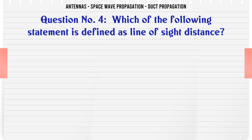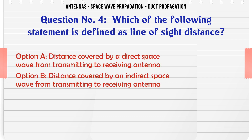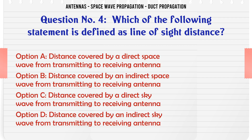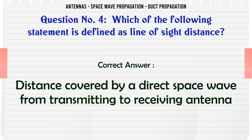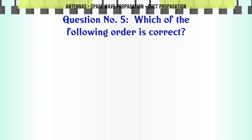Which of the following statements is defined as line-of-sight distance? A) Distance covered by a direct space wave from transmitting to receiving antenna. B) Distance covered by an indirect space wave from transmitting to receiving antenna. C) Distance covered by a direct sky wave from transmitting to receiving antenna. D) Distance covered by an indirect sky wave from transmitting to receiving antenna. The correct answer is: distance covered by a direct space wave from transmitting to receiving antenna.